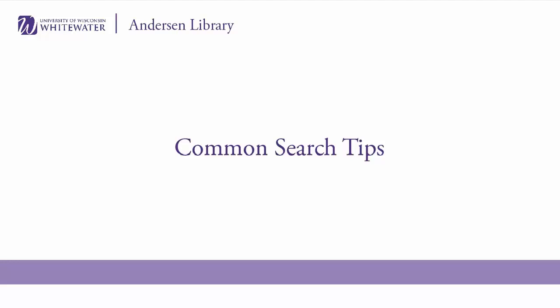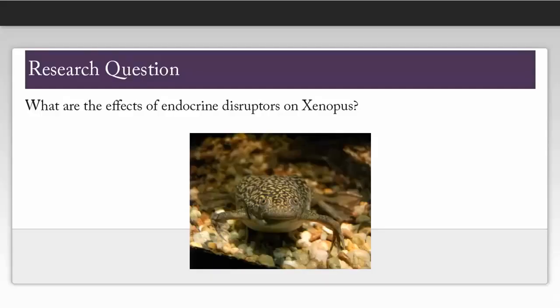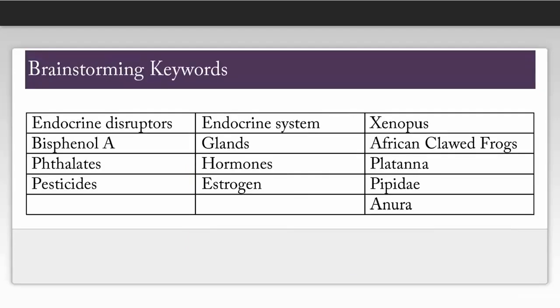In this video, we'll discuss some widely used search tips that are worth memorizing as you begin to search for articles in library databases. We'll be discussing these tips in the context of this question: What are the effects of endocrine disruptors on Xenopus?